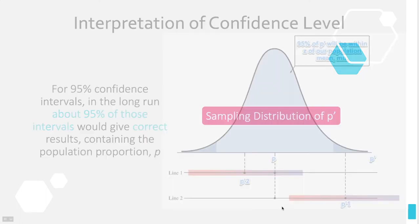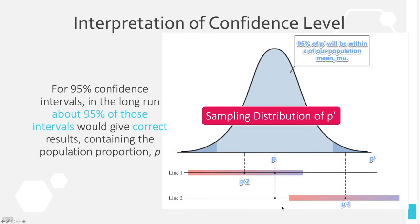With that in mind, we can start building our confidence intervals. The sampling distribution tells us that even though my 0.74 wasn't exactly at the center, once I add and subtract those two standard deviations I have a 95% chance of capturing p, because 95% of p-primes are in the light blue area. Confidence intervals are wrong 5% of the time when you have a 95% confidence interval — do not count on them being 100% correct. Statistics is almost never 100% correct.